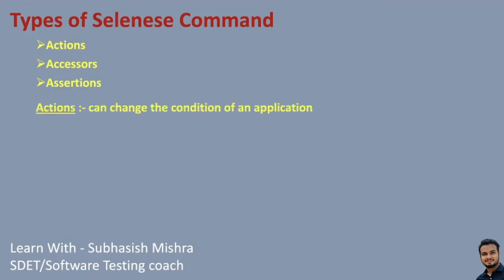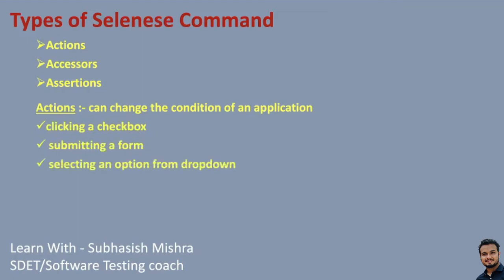What are actions? Actions are the commands which can change the condition of an application — for example, clicking a checkbox, submitting a form, selecting an option from a drop-down, or clicking on a link. When we perform these actions in a web page and if the action is not successful, then the test will fail. Examples of actions include 'click' and 'clickAndWait'.